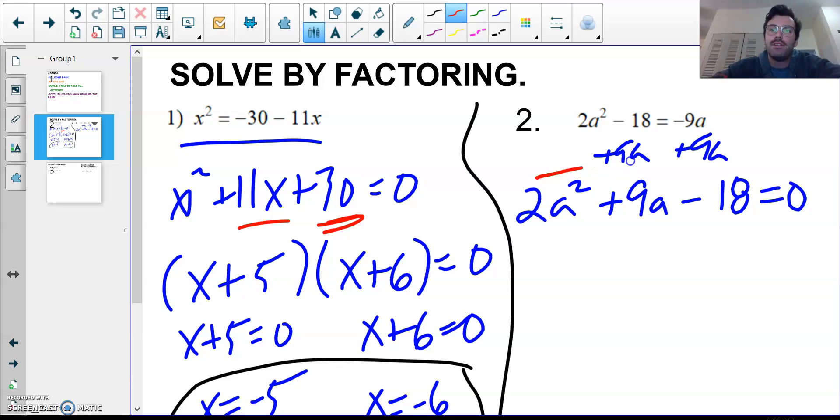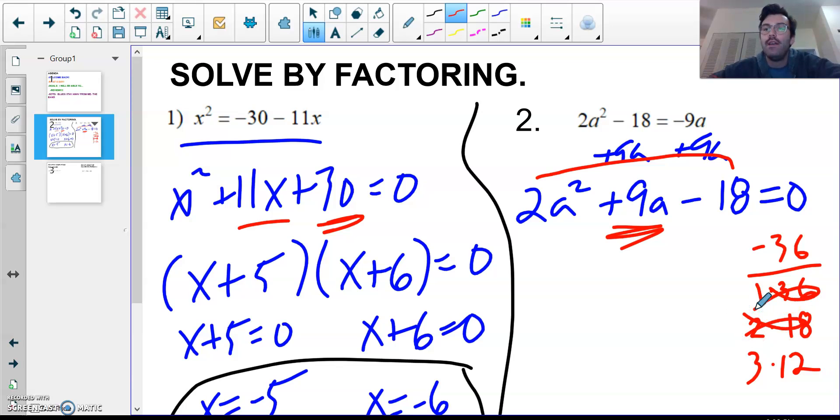So, that means I'm going to have to split the middle term. Remember, splitting the middle term. I do the first number times the last. 2 times negative 18. I get negative 36. I want to figure out the factors of 36 that will add to give me 9 here. Well, I know that's 1 and 36, 2 and 18, 3 and 12. Oh! Oh, boy. Well, I know it's got to be 3 and 12. And I know that the 9 has to be positive, which means the bigger number has to be positive.